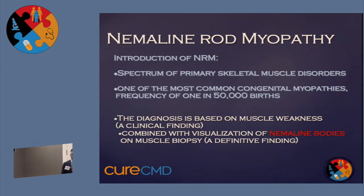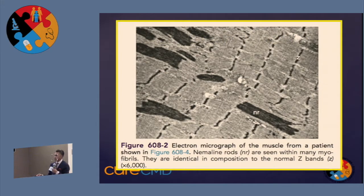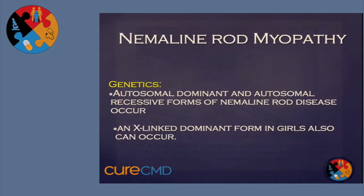The condition is diagnosed primarily with muscle biopsies and the presence of what's called the nemaline rods, as seen on electron microscopy — these black rods within the skeletal muscle. They're within the myofibrils and prevent muscle contraction. That's how it's picked up initially.